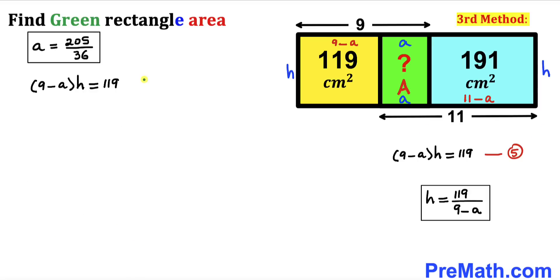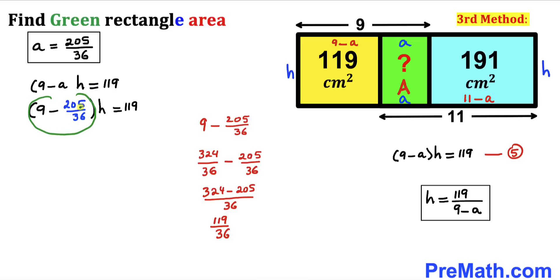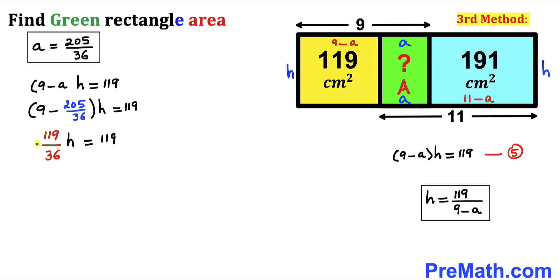Substituting a = 205/36 back into equation five, 9 − (205/36) simplifies to 119/36. So h = 119 ÷ (119/36). Multiplying by the reciprocal 36/119 isolates h, and the 119s cancel, giving h = 36.